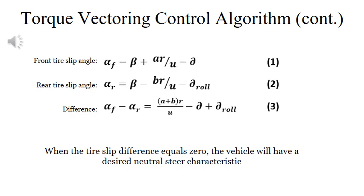These three equations shown are needed to implement a PD control algorithm that will be shown on the next slide. The most important variable throughout these equations is the tire slip angle. When the difference between the front tire slip angle and the rear tire slip angle equals zero, then the vehicle will have a desired neutral steer characteristic and will be easier to maneuver in a corner.